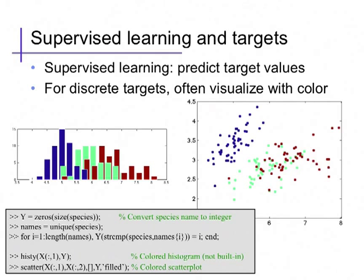So, for a discrete labeling problem, a classification problem, we can use color to understand how the histograms differ between the different classes or where the data from each class are located on that scatter plot. This gives us a sense of how easy it's going to be to predict the species, the target variable, from the other features.